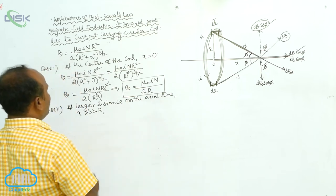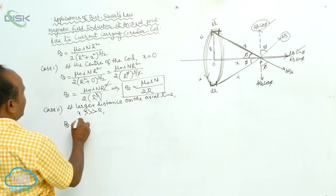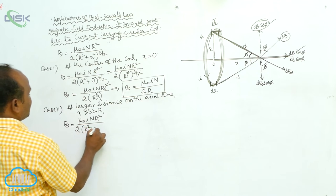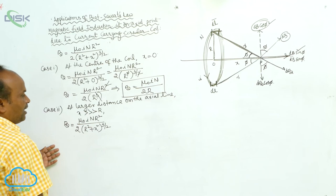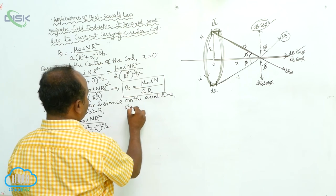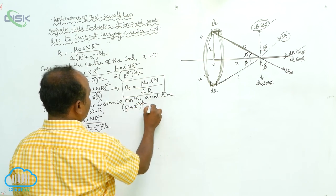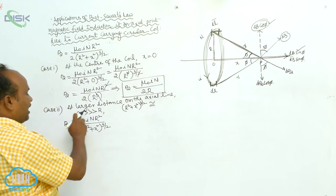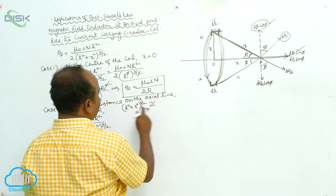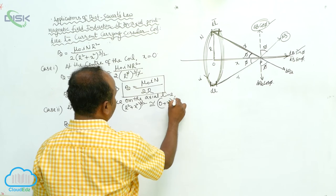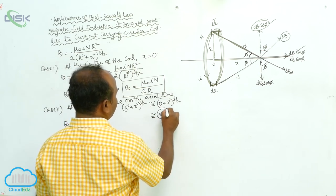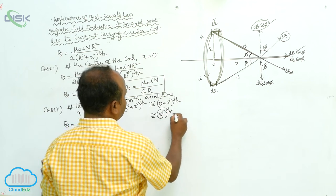Therefore, the magnetic field induction is B = μ₀inr² / [2(r² + x²)^(3/2)]. This is the general formula. As x is much greater than r, r is very small and can be neglected. So r² + x² ≈ x², and (r² + x²)^(3/2) ≈ (x²)^(3/2) = x³.